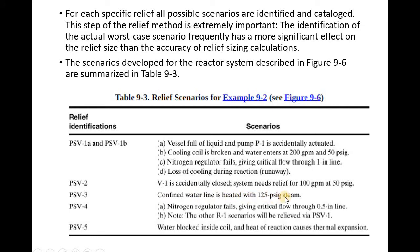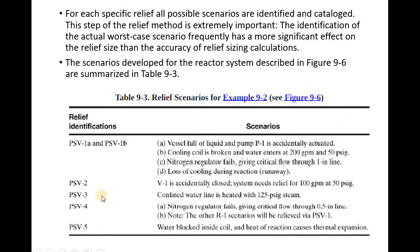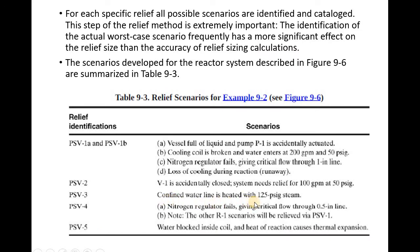Another scenario: a confined water line is heated with steam, so PSV-3 will be working. The cooling water gets heated up and we need a relief valve there. Another scenario for PSV-4: if nitrogen fails and other R-1 scenarios occur. PSV-5: if water is blocked inside the coil and the heat of reaction causes thermal expansion, the cooling is not happening and heat builds up inside.